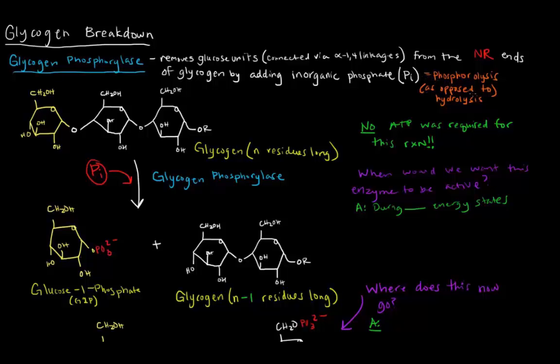So this is opposed to hydrolysis. Hydrolysis was the addition of water to a covalent bond to break that bond. In this case, we're adding a phosphate to break the bond. So how does this work?